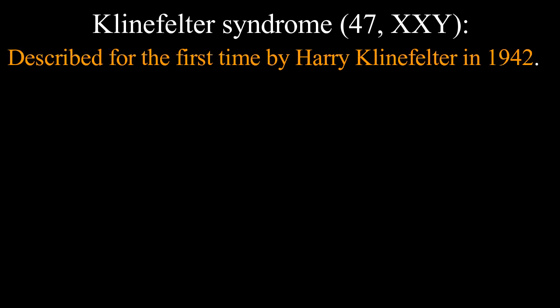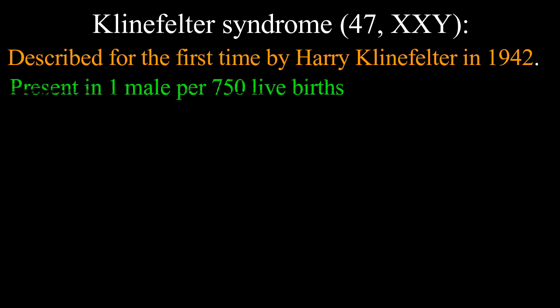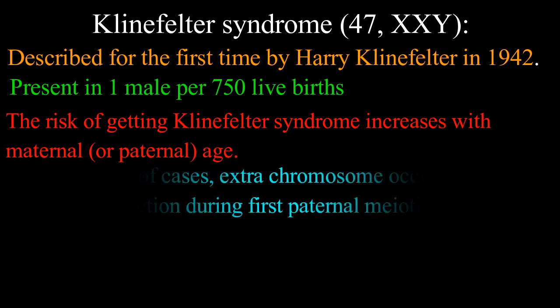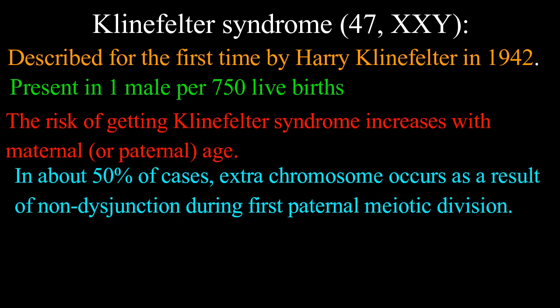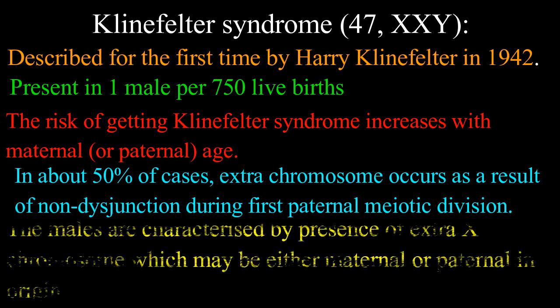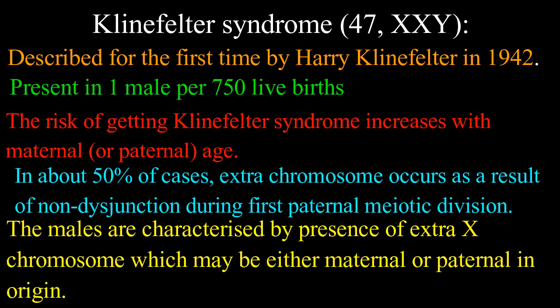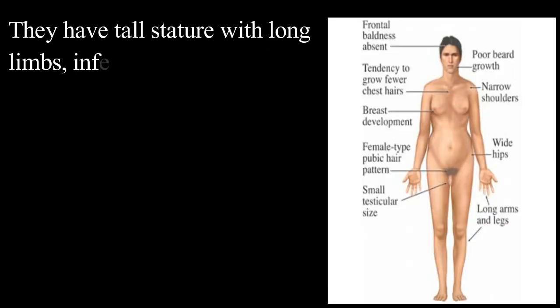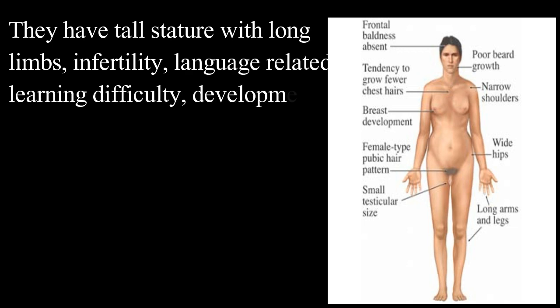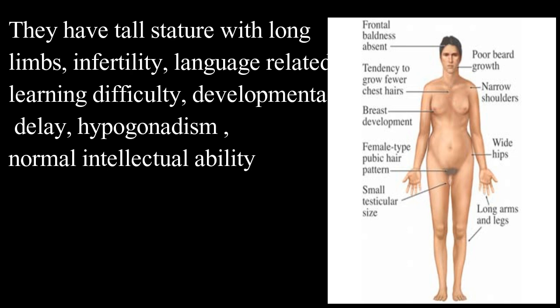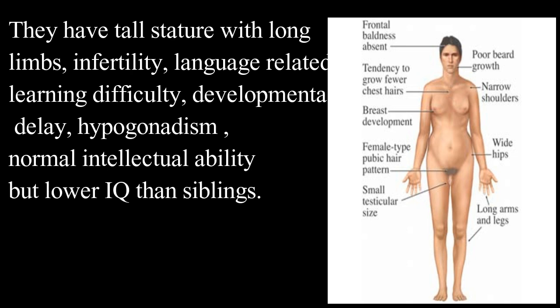Klinefelter syndrome consists of 47 chromosomes with XXY karyotype. It was described for the first time by Henry Klinefelter in 1942, and is present in 1 male per 750 live births. The risk increases with maternal or paternal age. In about 50% of cases, the extra chromosome occurs as a result of non-disjunction during the first paternal meiotic division. Males are characterized by the presence of an extra X chromosome, which may be either maternal or paternal in origin. They have tall stature with long limbs, infertility, language-related learning difficulty, developmental delay, hypogonadism, and normal intellectual ability but lower IQ than siblings.